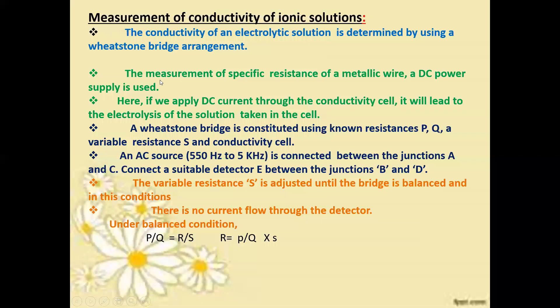The first point is the measurement of specific resistance. In the setup, R is fixed and S is adjusted. Here P and Q are the known resistances in the bridge.